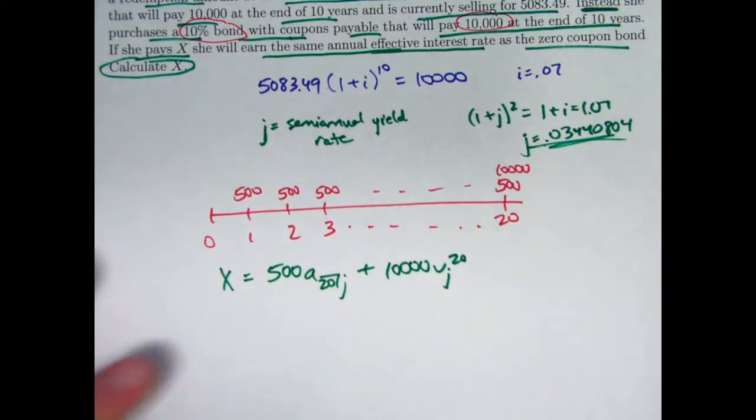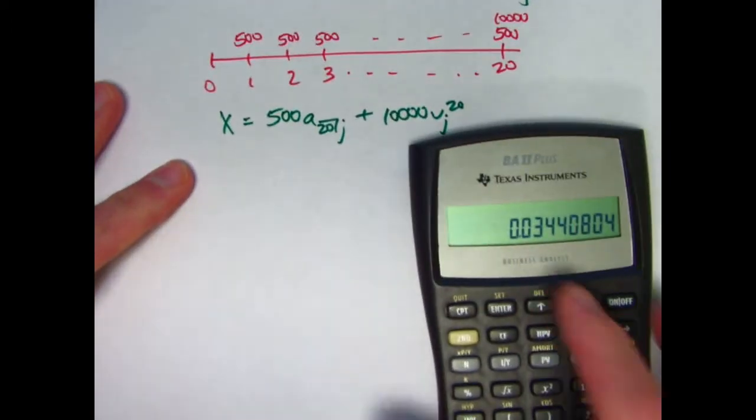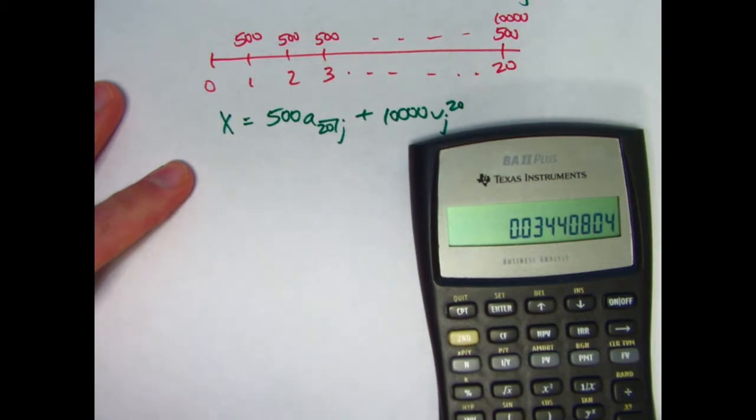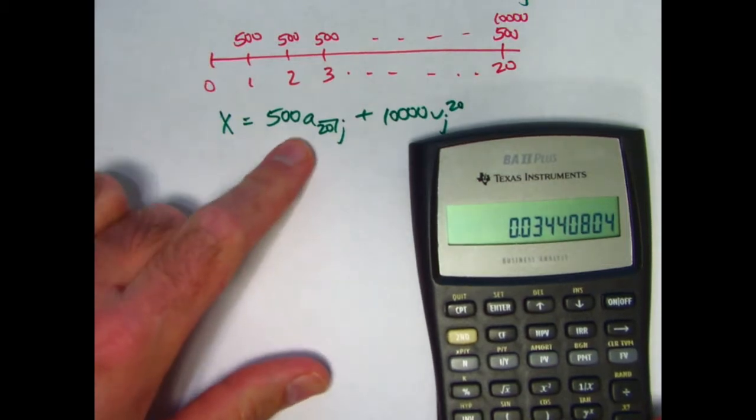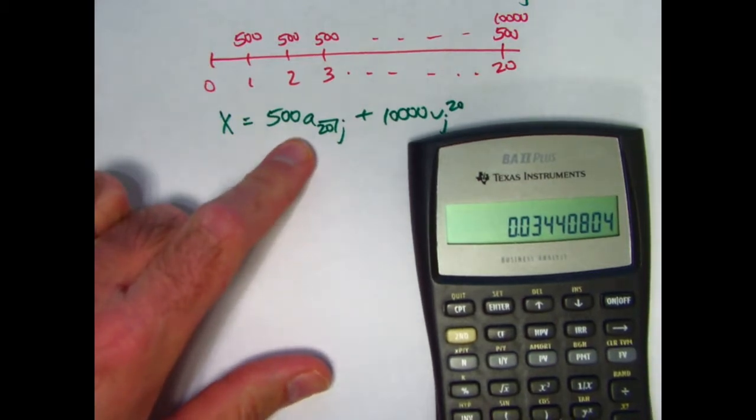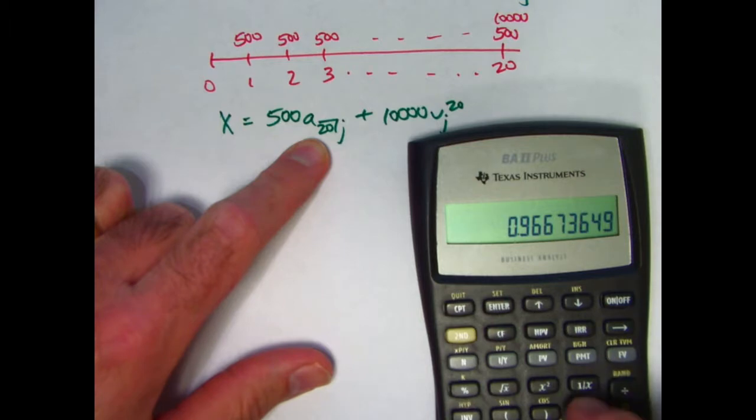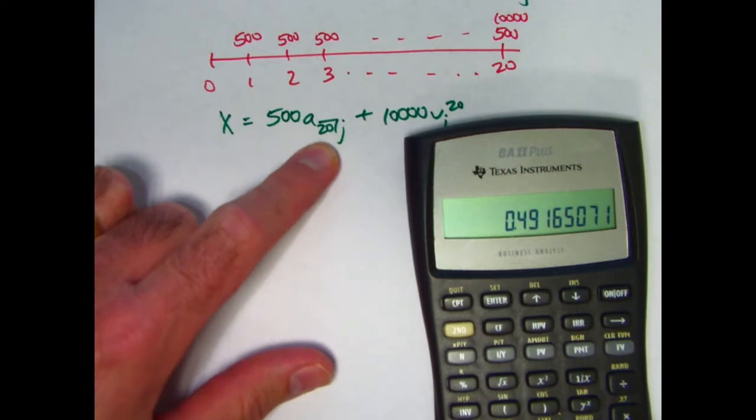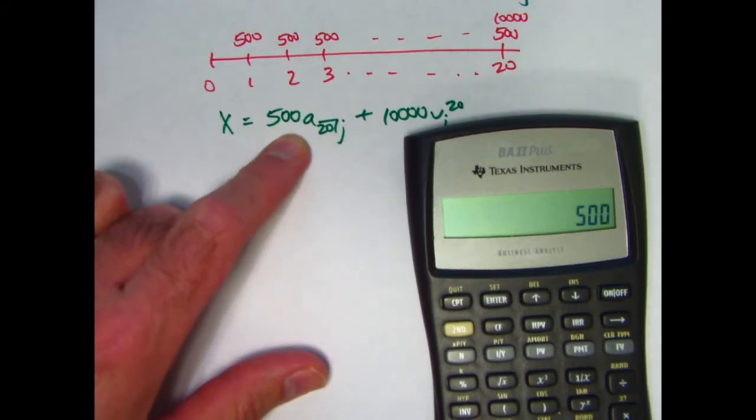I'm going to store this in register zero. Let's calculate this first and we'll store it in register one. So I need to add one to it, take the reciprocal, raise it to the 20th power, subtract from one. We do this calculation over and over again. Divide by J which is in register zero, multiply by 500. This value is about 7144. I'm going to store that in register one.